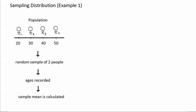In this first example, we're looking at a population of four people. In this population, there's one 20-year-old, one 30-year-old, one 40-year-old, and one 50-year-old. The mean age of this population is 35. If you added the four ages and divided the total by 4, you would get 35.